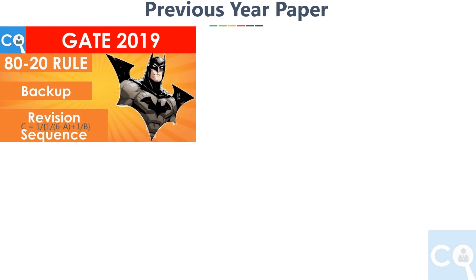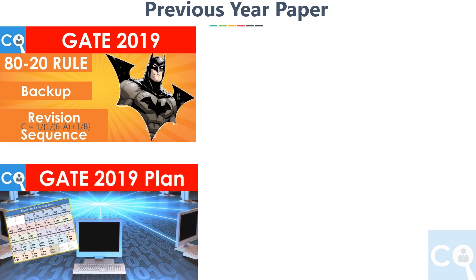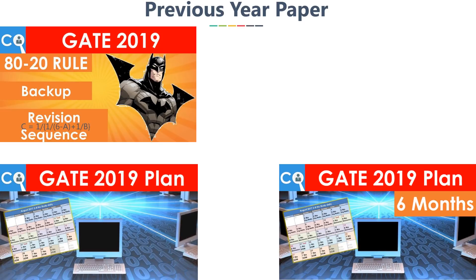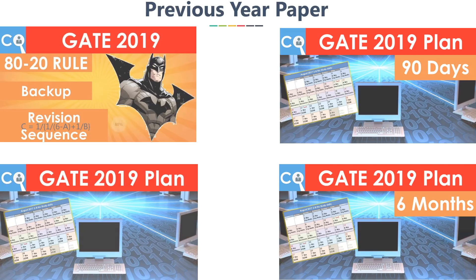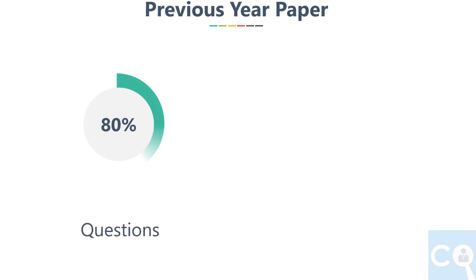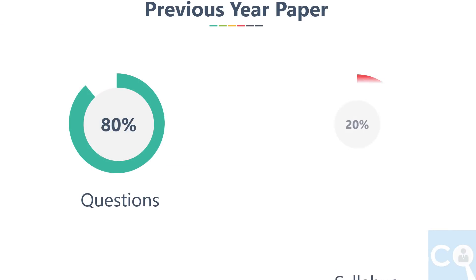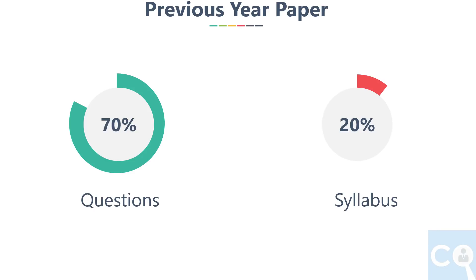Now let's start with the first point — previous year paper analysis. If you have seen my old videos on the Batman plan for 1 year, 6 months, and 90 days, we derived all important topics using the 80-20 rule, which says 80% of questions come from 20% of the syllabus. But on the conservative side, we took plus or minus 10%, meaning 70% of questions will come from 30% of the syllabus.